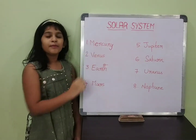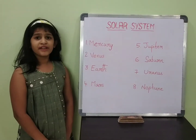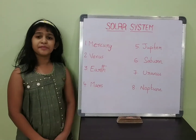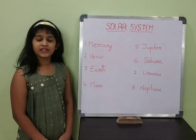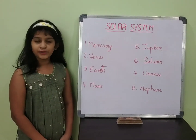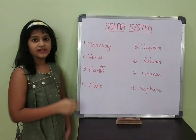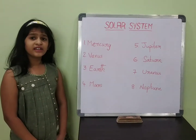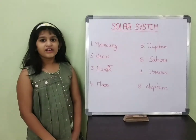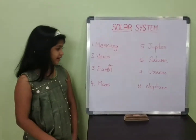First one, Mercury. Mercury is the hottest planet in the solar system because it is near the sun. Second one, Venus. Venus is the sixth largest planet.